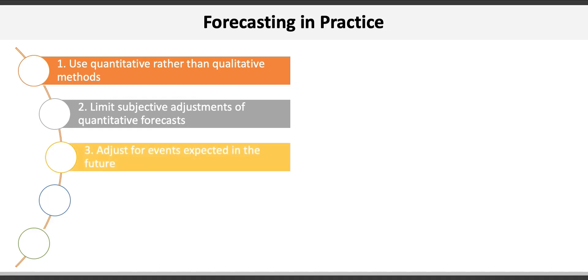Third is to adjust for events expected in the future. Time series data captures only what has happened, and we rely on that data to project the future, assuming it will resemble the past. But if we know something's going to happen that will likely affect the future, and then it's not reflected in the historical data, then we should account for it.